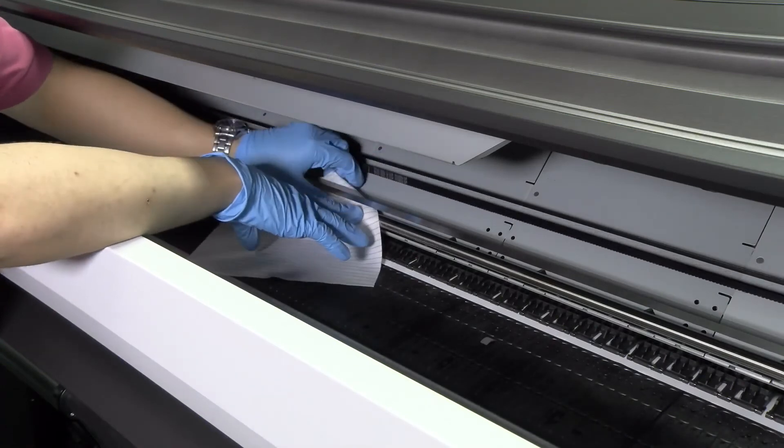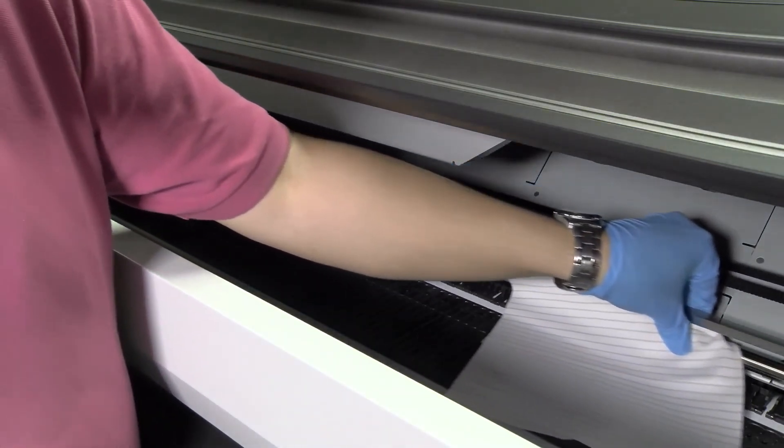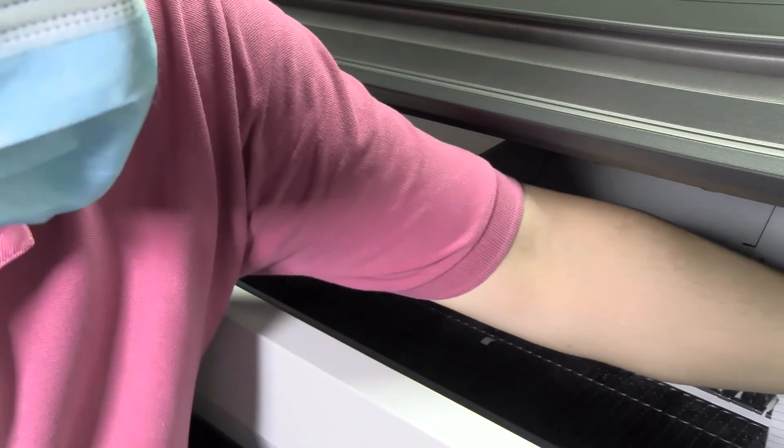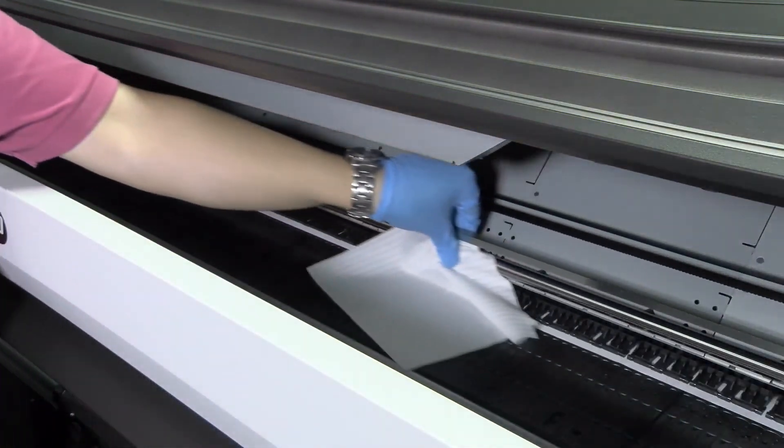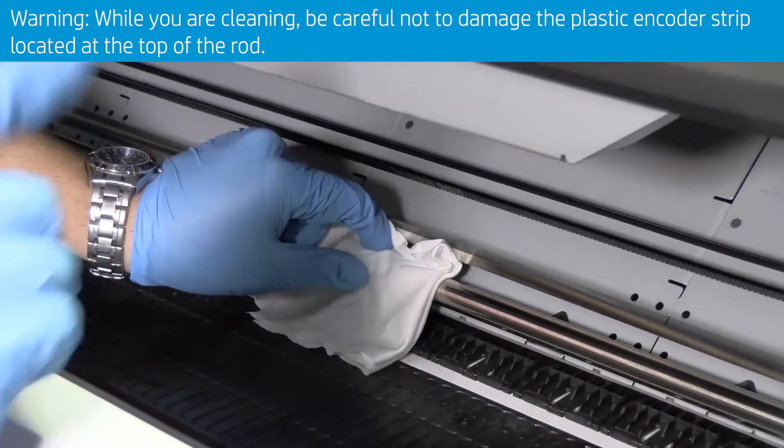Clean the carriage rod using a clean cloth dampened with a general-purpose industrial cleaner. Remember to also clean the part under the right cover. While you are cleaning, be careful not to damage the plastic encoder strip located at the top of the rod.